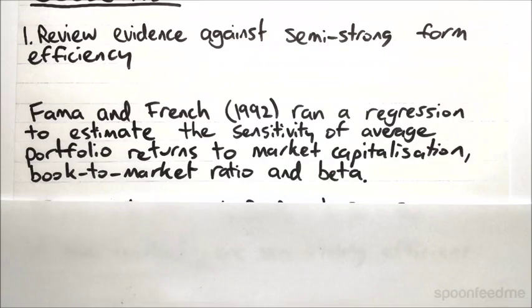Beta being, of course, what it's always been in the single index model. So they're making an assumption that the portfolio's average return is dependent on these three factors.